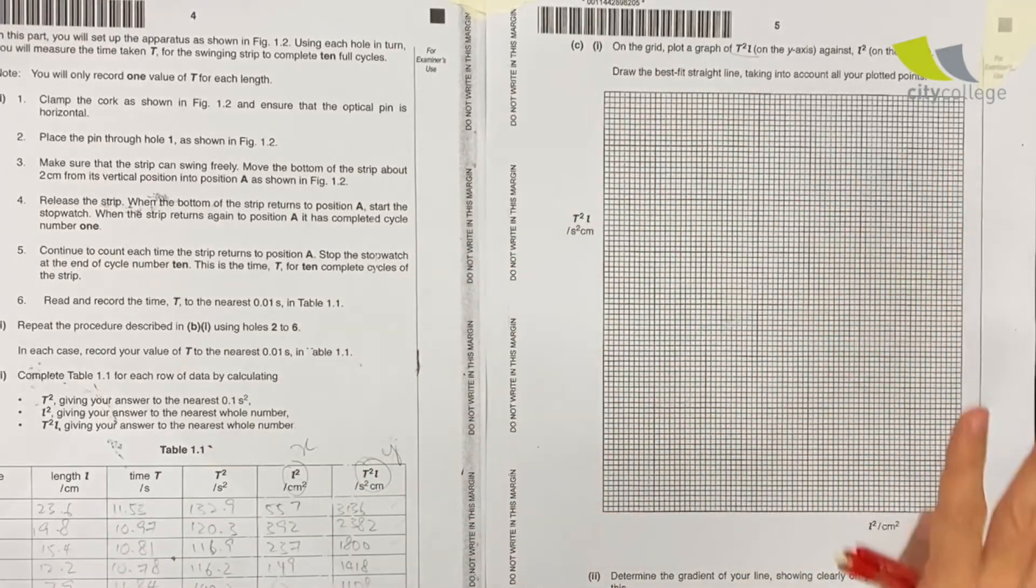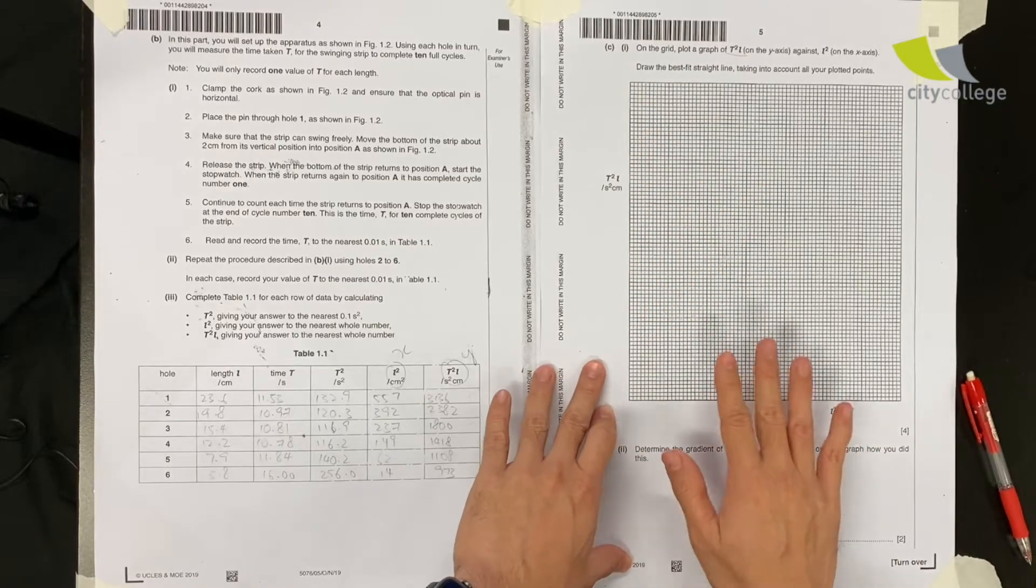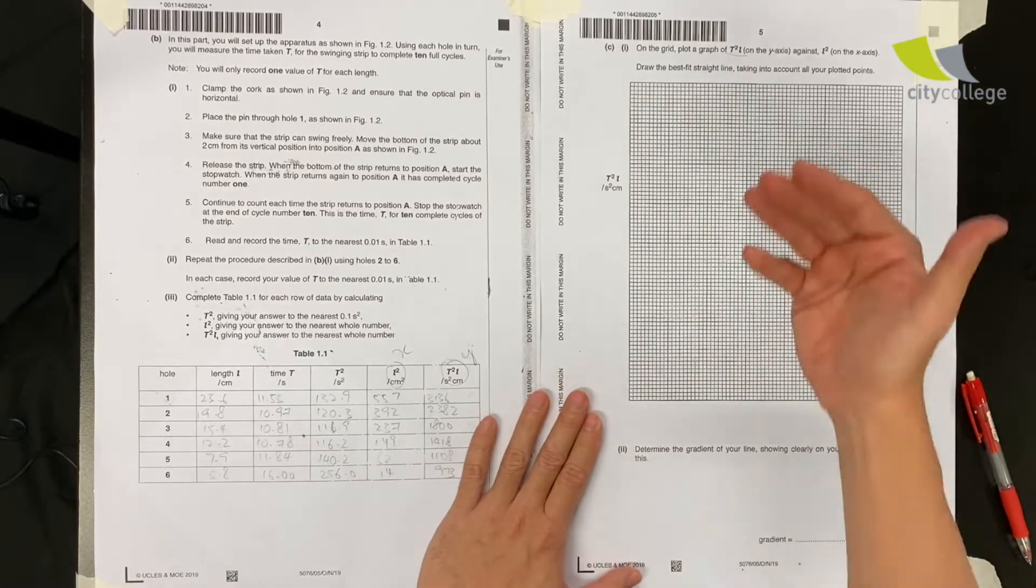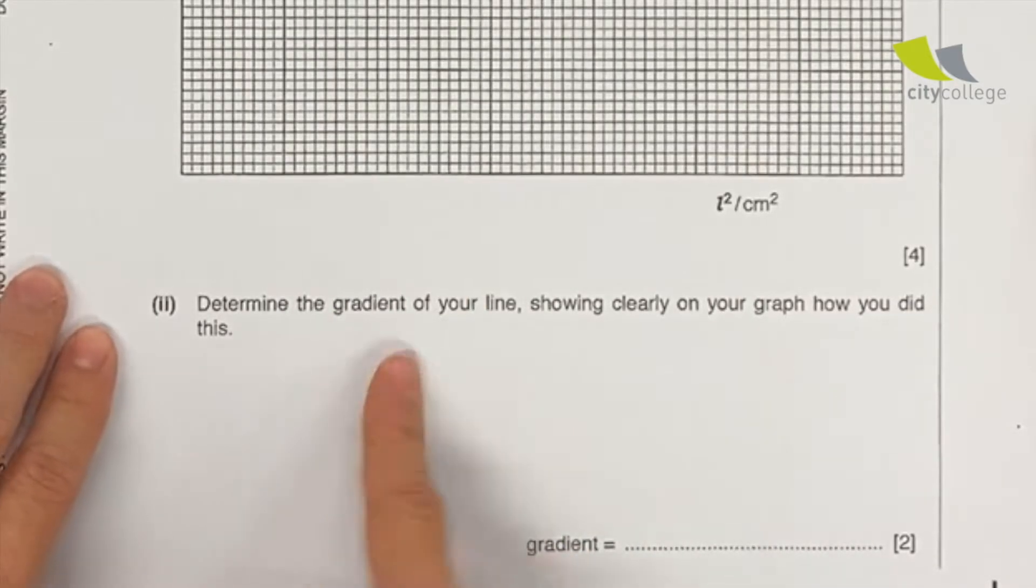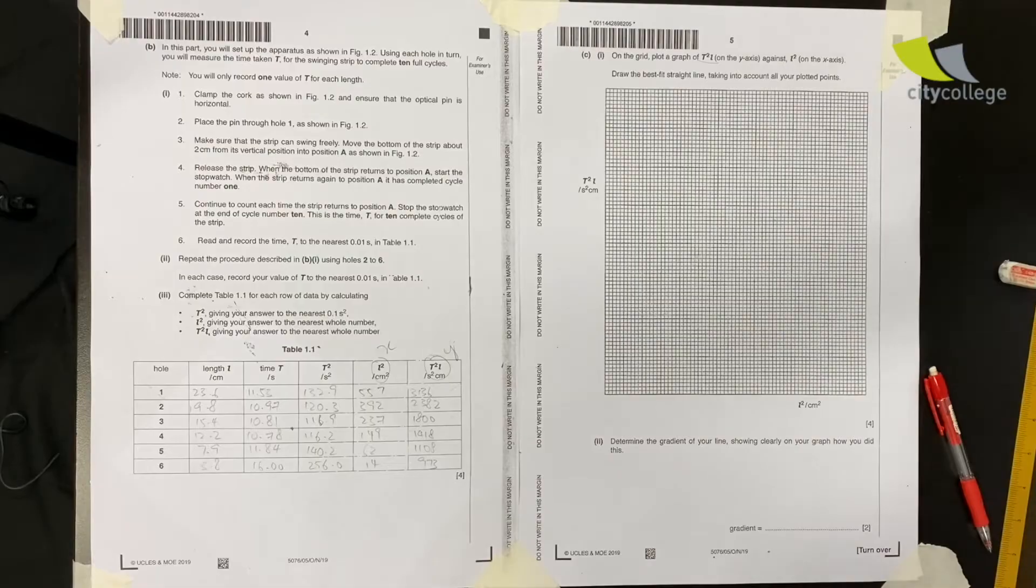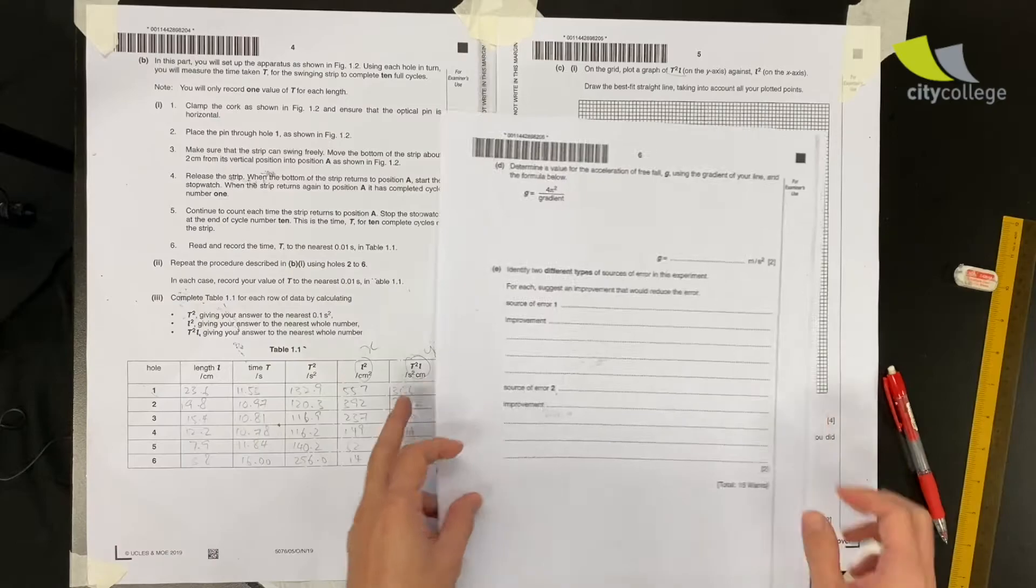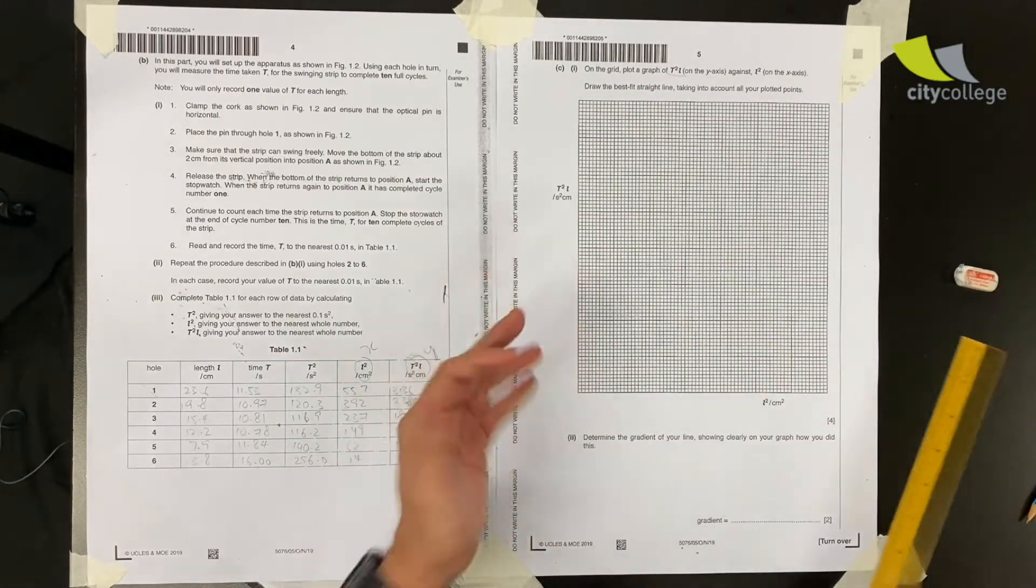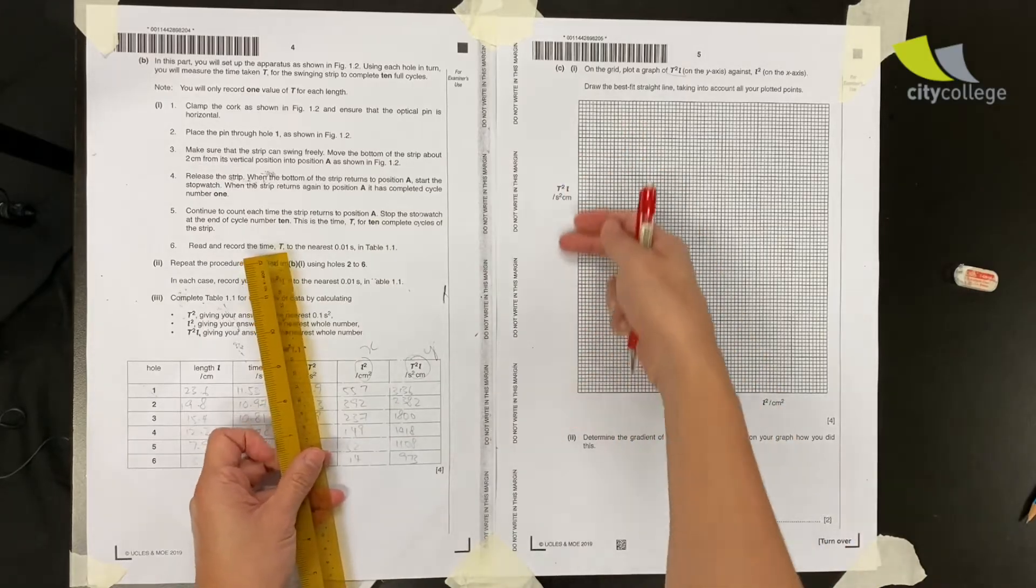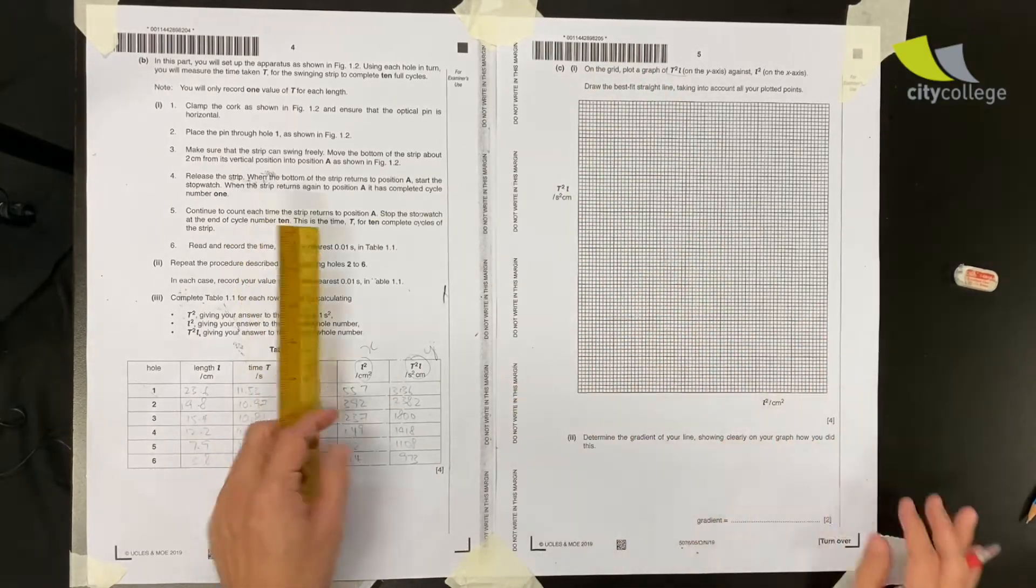Draw the best fit line taking into account all your plotted points. Before you plan the scale, it's very important to always understand what they're going to ask you to do with the graph. They want you to find a gradient, so you look at the next question. It's simply plotting the gradient to do a calculation. We don't need to find the y-intercept. In this case, if you want to use a kink scale it's possible, but try your best not to use it unless it's totally necessary.